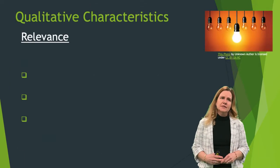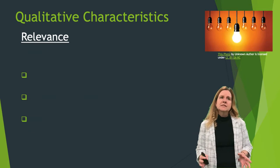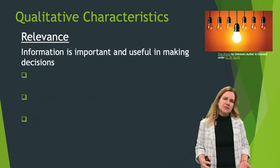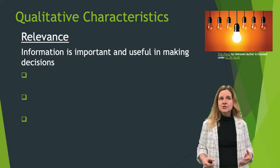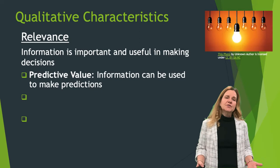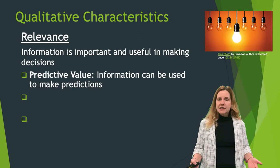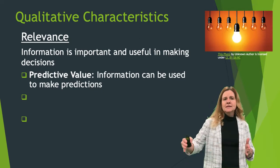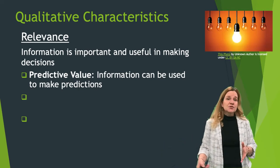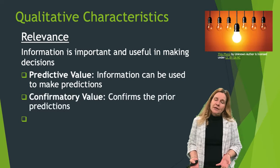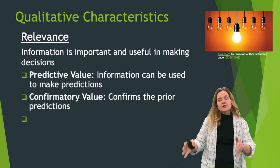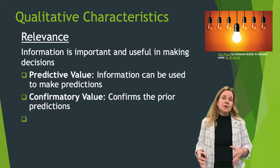Starting off with qualitative characteristics. The first is relevance — the information needs to be important and useful in making decisions to investors. It has to have predictive value, so when an investor looks at the income statement and trends, they should be able to predict future revenue, expenses, and cash flows. It needs to be confirmatory, meaning any predictions they've made, they should be able to look to the financial reports and confirm.